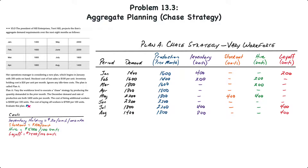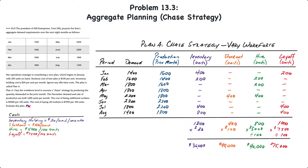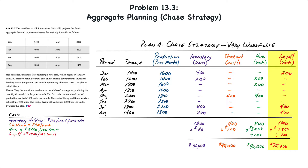Now that we've determined ending inventory, stockouts, and hiring and layoff figures, we can calculate total costs by summing each column and multiplying by its respective cost. Total ending inventory over the eight months is 1,800 units at $20 per unit per month — a total of $36,000. Stockout costs: the company only stocked out by 400 units in May at $100 per unit — $40,000. Hiring costs: the equivalent of 800 units (eight workers) were hired at $5,000 per 100 units — $40,000. Layoff costs: 1,000 units (ten workers) were laid off at $7,500 per 100 units — $75,000. Therefore, the total cost for Plan A is $191,000.